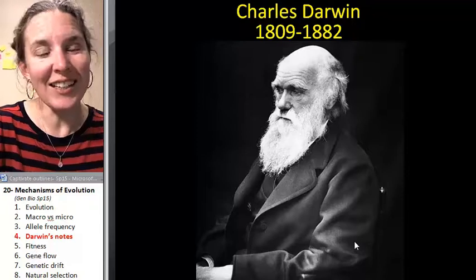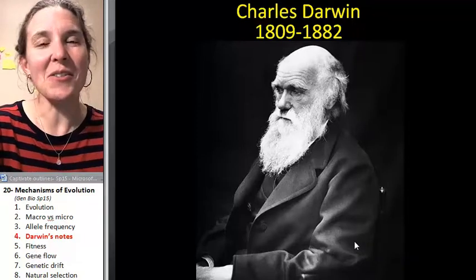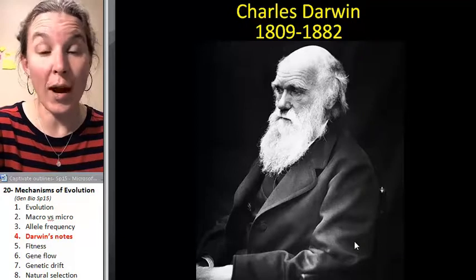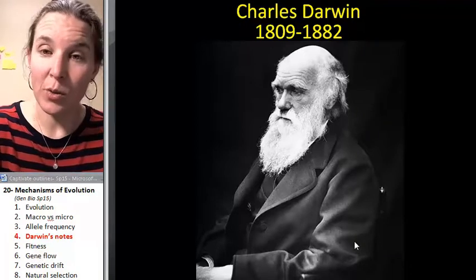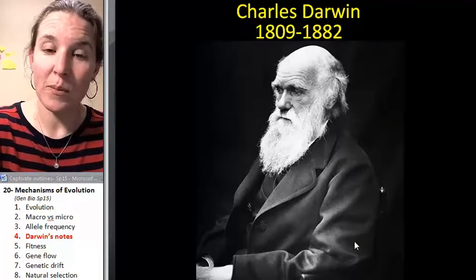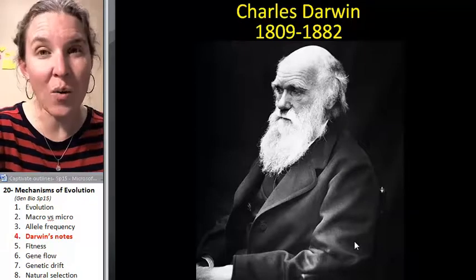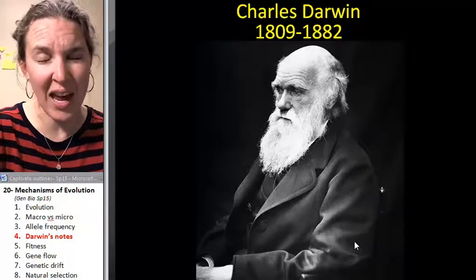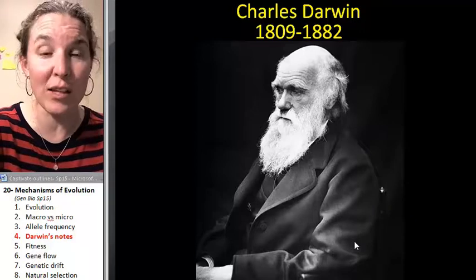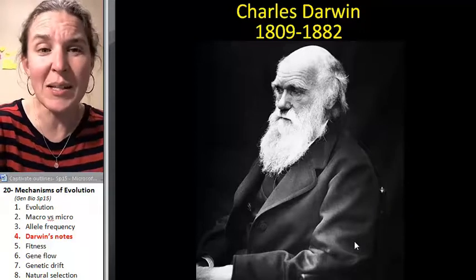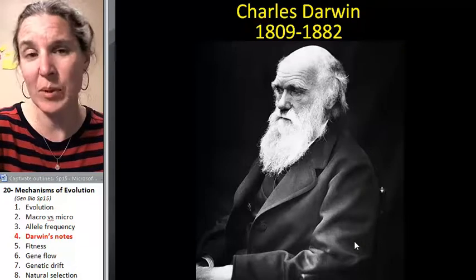Charles Darwin is quite a famous fellow who pretty much came up with an explanation for how evolution can happen — how allele frequencies can change. What is a mechanism by which this can take place?